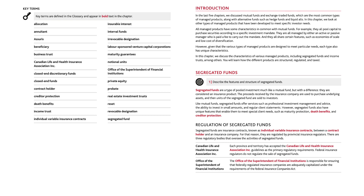Segregated funds. Segregated funds are a type of pooled investment much like a mutual fund, but with a difference — they are considered an insurance product. The proceeds received by the insurance company are used to purchase underlying assets, and then units of the segregated fund are sold to investors. Like mutual funds, segregated funds offer services such as professional investment management and advice, the ability to invest in small amounts, and regular client statements. However, segregated funds also have unique features that enable them to meet special client needs, such as maturity protection, death benefits, and creditor protection.